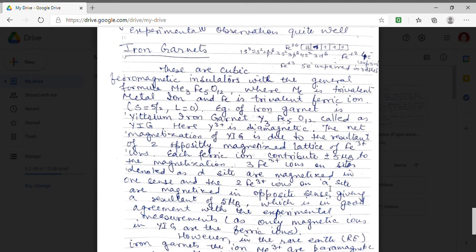So there will be magnetization from the resultant will be from only one iron 3 plus iron. That means the total magnetization will be 5 mu B.